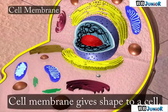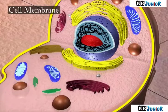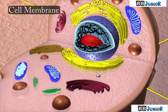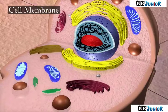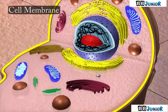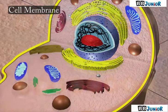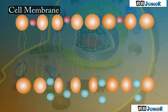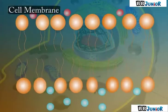This membrane gives shape to a cell. The cell membrane separates cells from one another and also the cell from the surrounding medium. The membrane is porous and allows the movement of substances or materials both inward and outward.